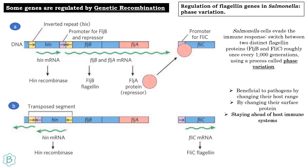We will now see gene regulation by genetic recombination. This is an example of regulation of flagellin genes in Salmonella, which is known as phase variation. You can see here a DNA segment of the Salmonella genome where the HIN gene codes for HIN mRNA and that codes for HIN recombinase protein. The yellow portions are 14-nucleotide inverted repeats, known as hix sites, and this region is a promoter for flagellin B and flagellin A. Flagellin A is a repressor protein that binds to the promoter of flagellin C, thus inhibiting flagellin C transcription.